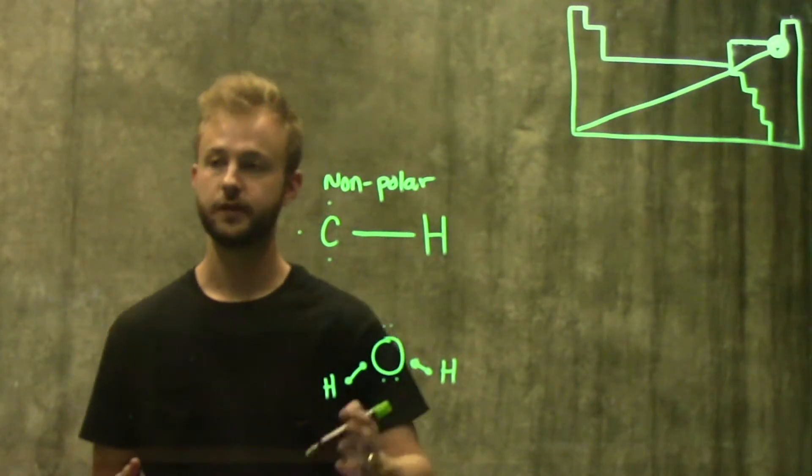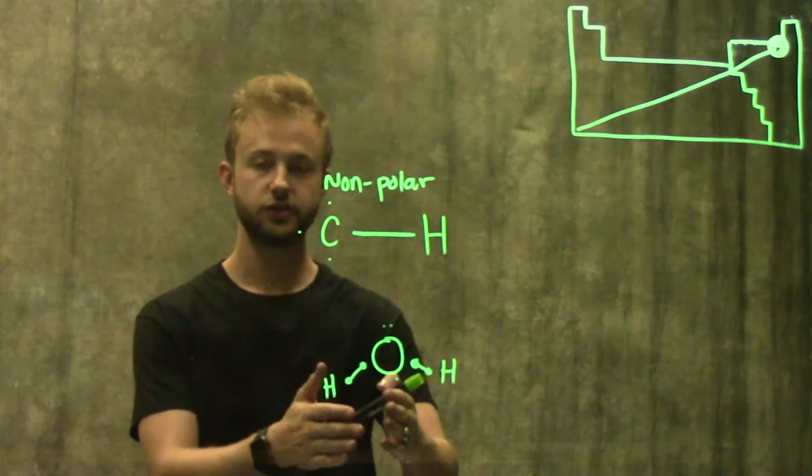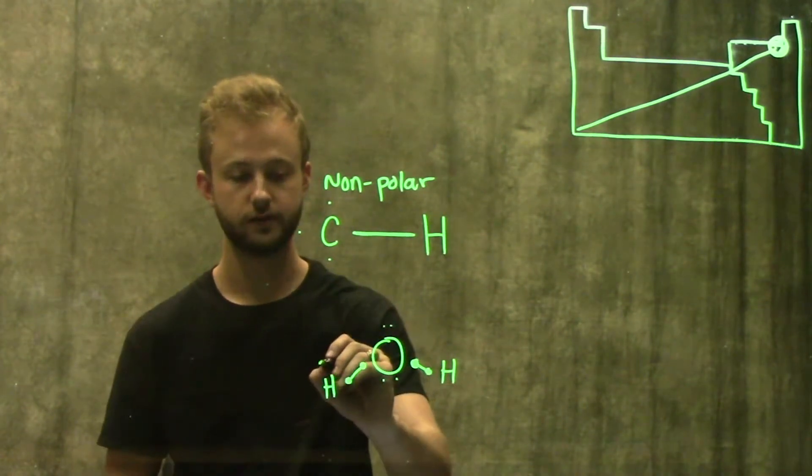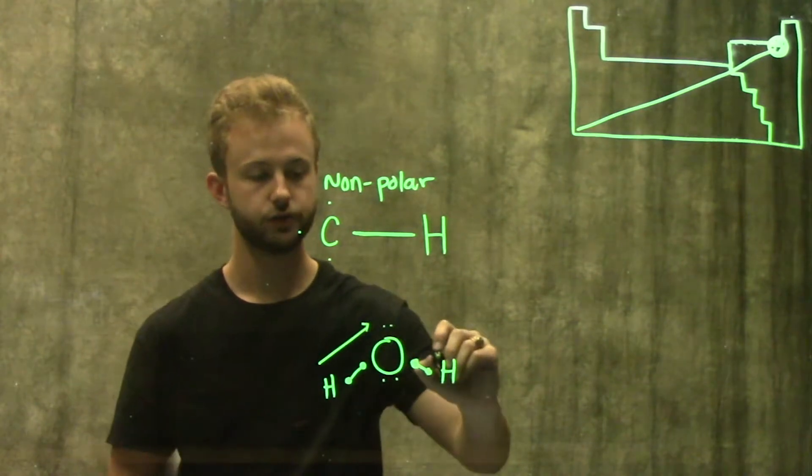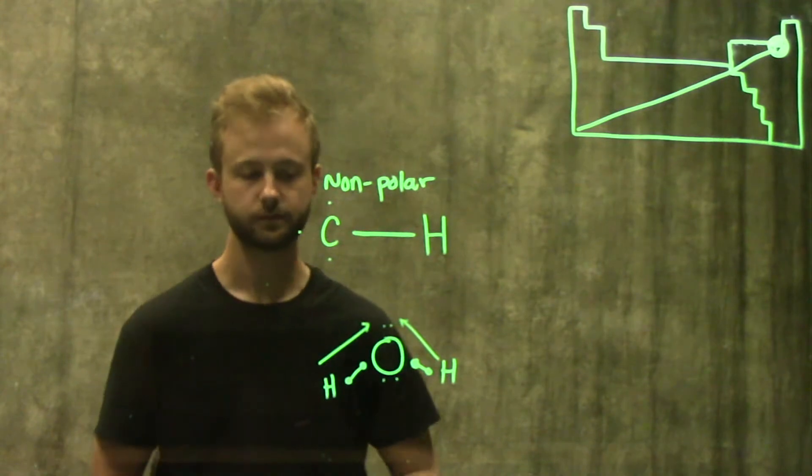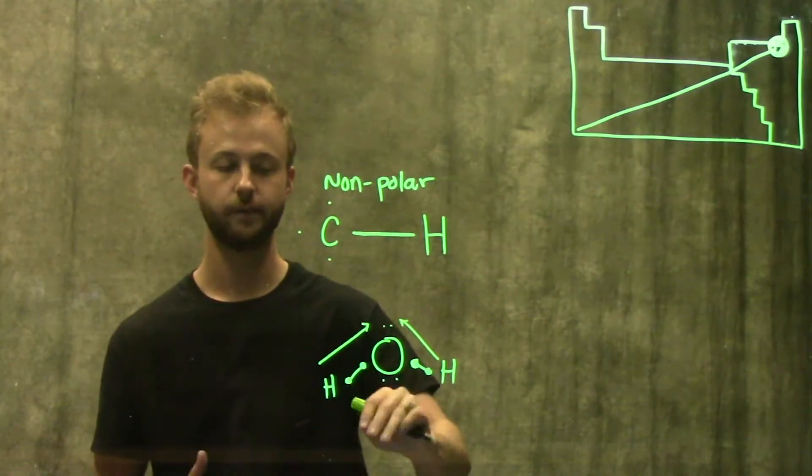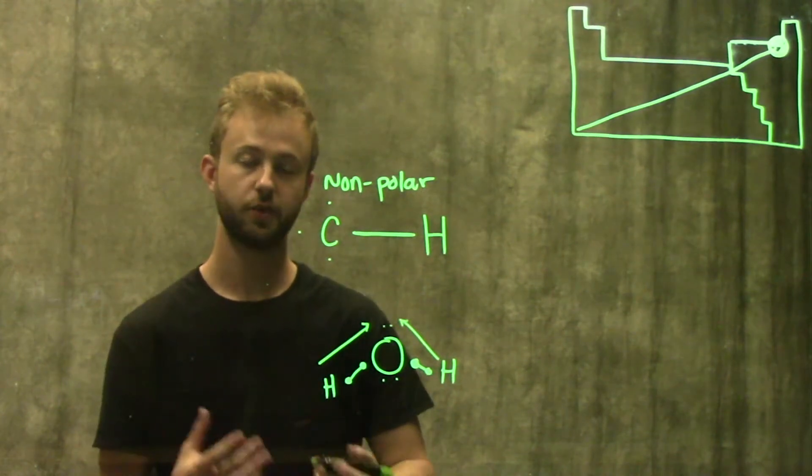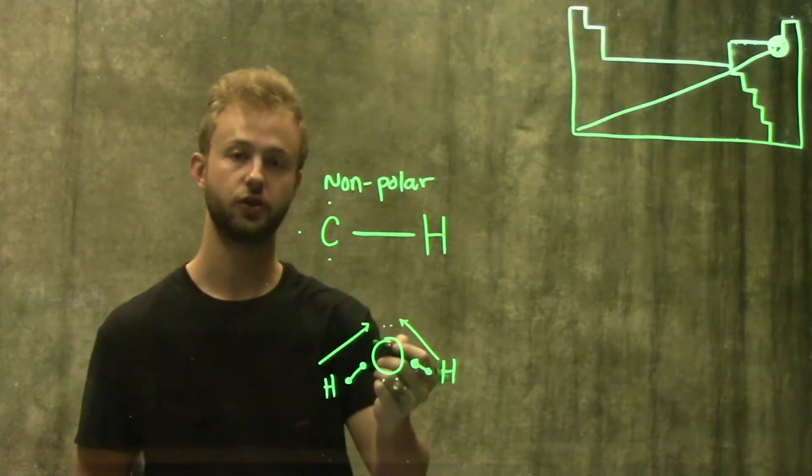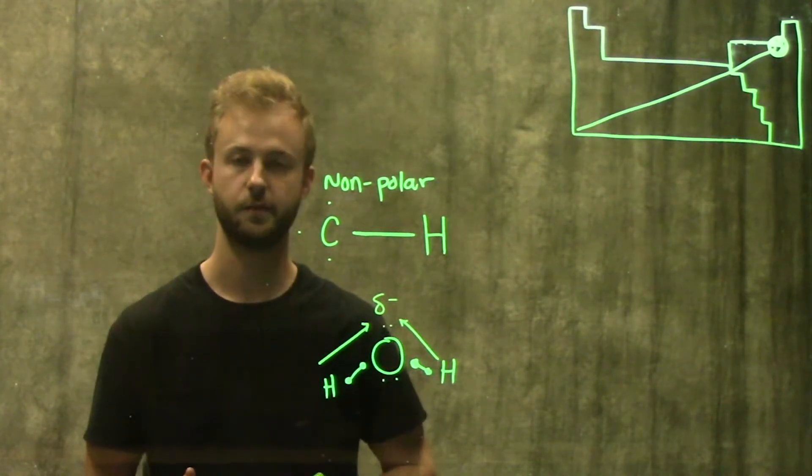Now the difference between this and the non-polar covalent bond is that oxygen is more electronegative than hydrogen, so it's going to pull these electrons closer to itself than they are to the hydrogen atoms. Now we have more electrons circulating around this oxygen atom, which means we have more negative charges. This oxygen atom is going to have a slight negative charge, which we write as a lowercase delta and then a minus.